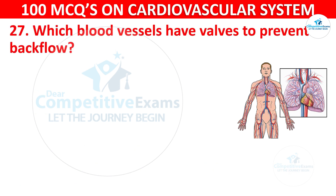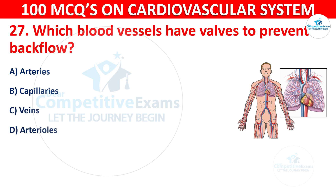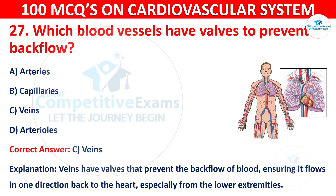Question 27: Which blood vessels have valves to prevent backflow? Options are: Arteries, Capillaries, or Veins. The correct answer is C, Veins. Veins have valves that prevent the backflow of blood, ensuring it flows in one direction back to the heart, especially from the lower extremities.